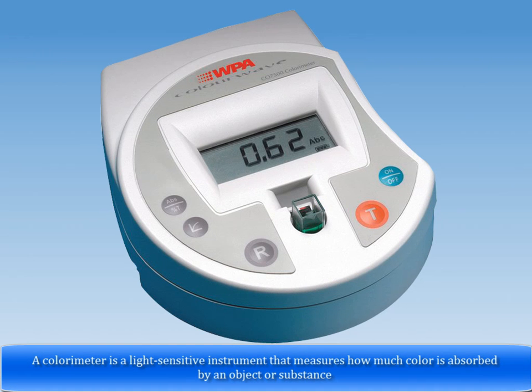Colorimeter. A colorimeter is a light-sensitive instrument that measures how much color is absorbed by an object or substance.